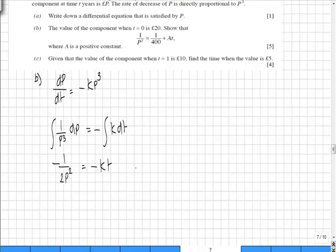The integral of k which is a constant is just going to be kt plus some constant c. We're given that when t equals 0, p is equal to 20, the price of the components.